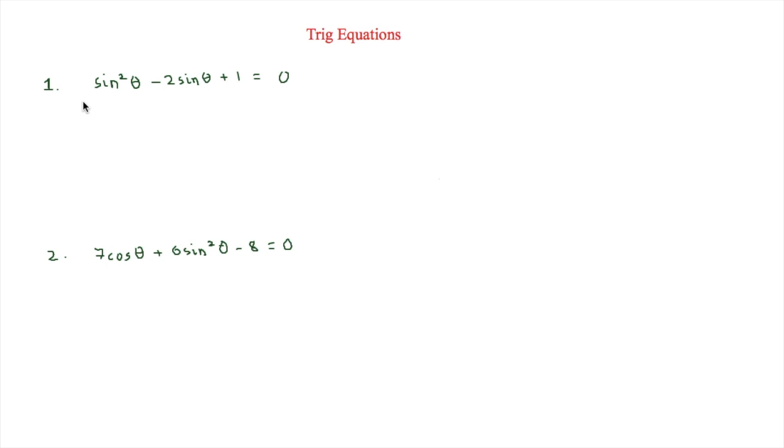So the next part to look at is when we put it into a quadratic equation. And the first one here is sin squared theta minus 2 sin theta plus 1 is equal to 0. And in order to make this easier, I'm going to say that sin theta is equal to w.